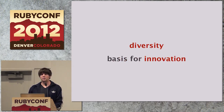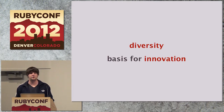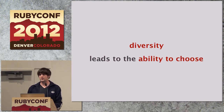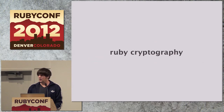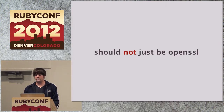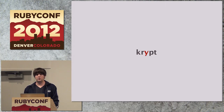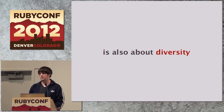In Matt's keynote, we all heard about how diversity is the basis for innovation. And I also think that diversity is what gives us the ability to choose the right tool for the job. That's why I think that Ruby cryptography should not be just about using OpenSSL as it is right now. And that's where Crypt enters the picture, because Crypt is also about diversity.